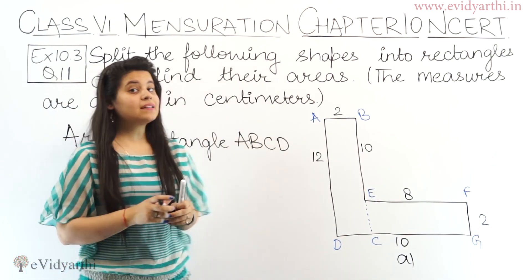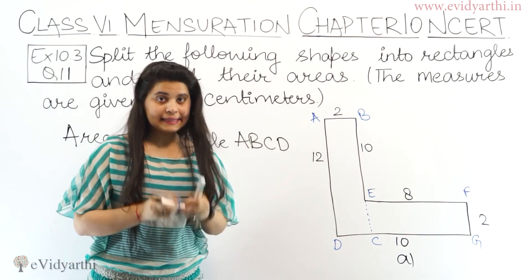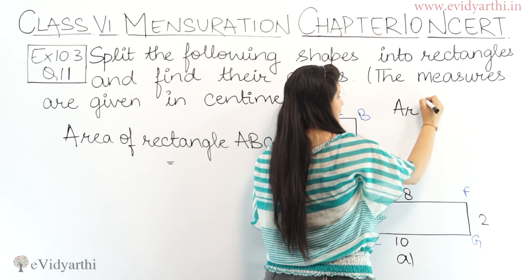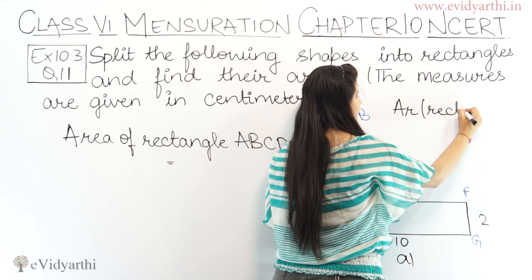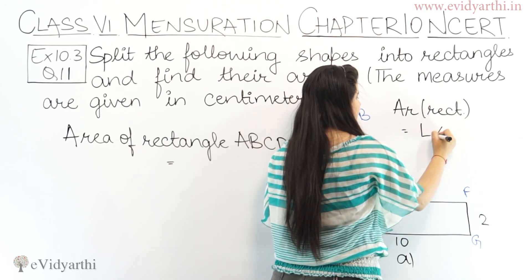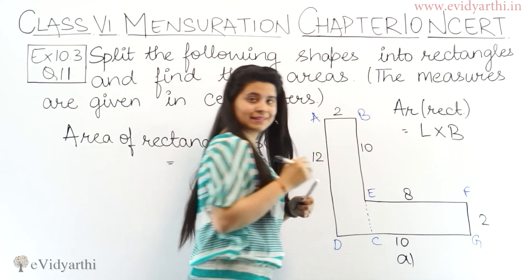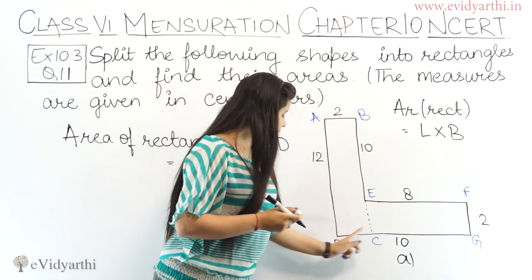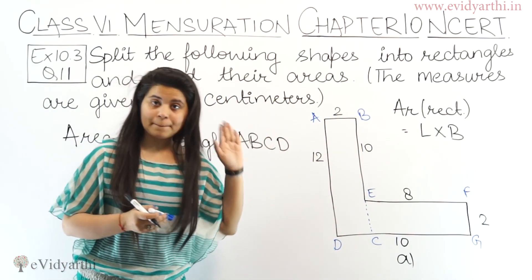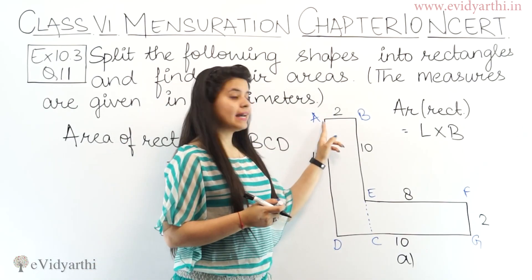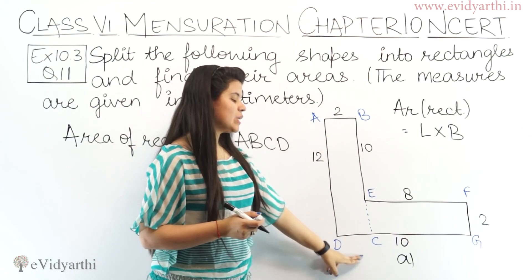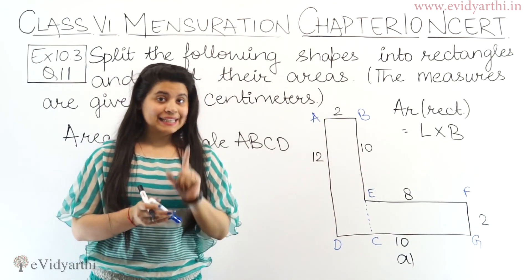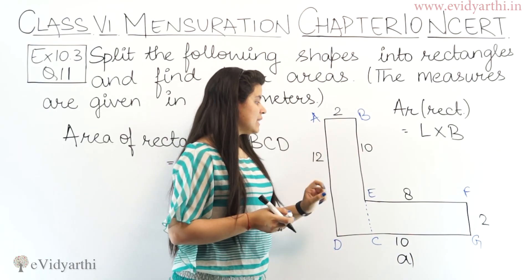Since it is a rectangle, the area of a rectangle is length into breadth. Now we need to find the length and breadth of rectangle ABCD. The length given is 2 cm, and since opposite sides of a rectangle are equal, DC will also be 2 cm. So length is 2 cm.